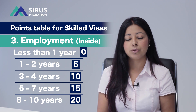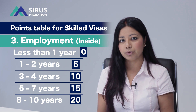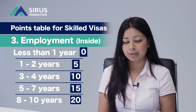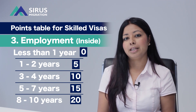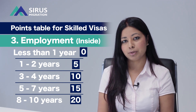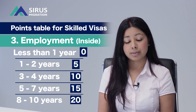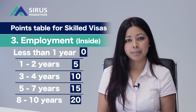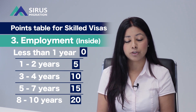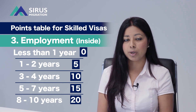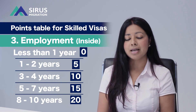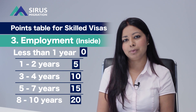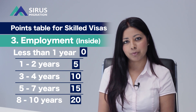The next category is skilled employment in Australia. Most international students on a 485 visa may be able to get skilled employment in their nominated occupation for 1 to 2 years, and you will be able to claim 5 points for this.